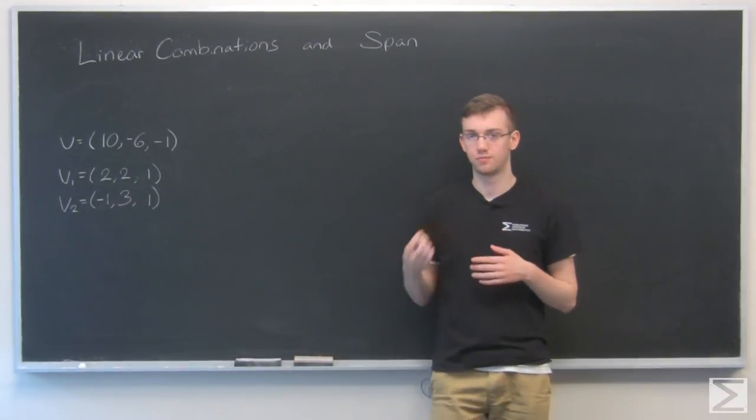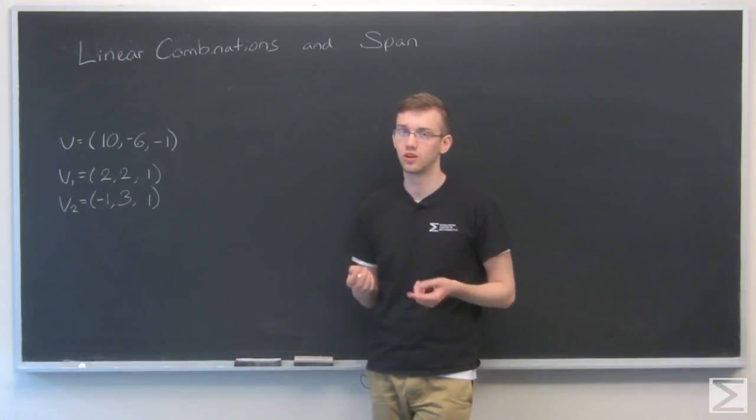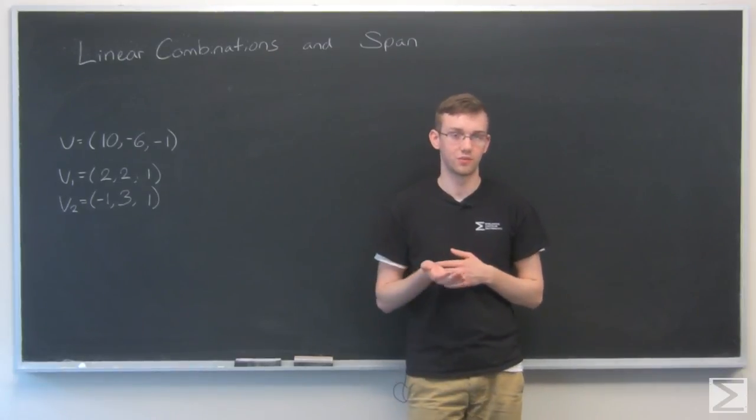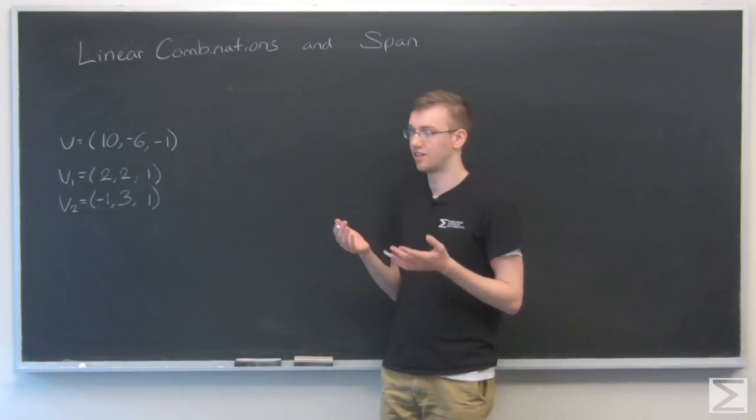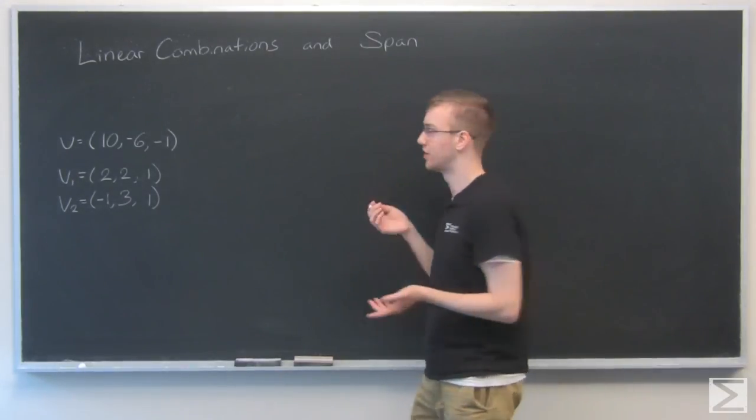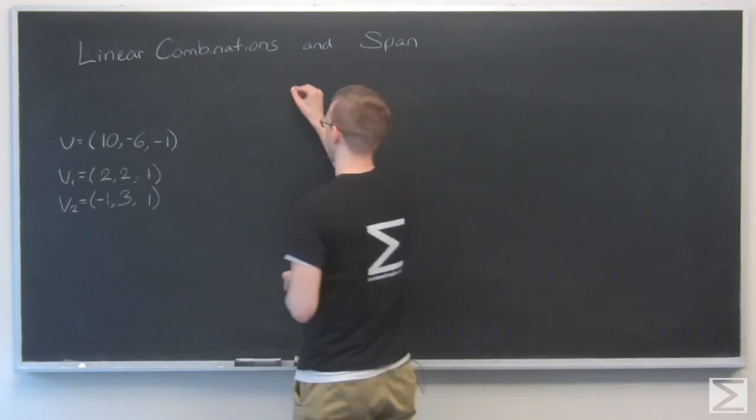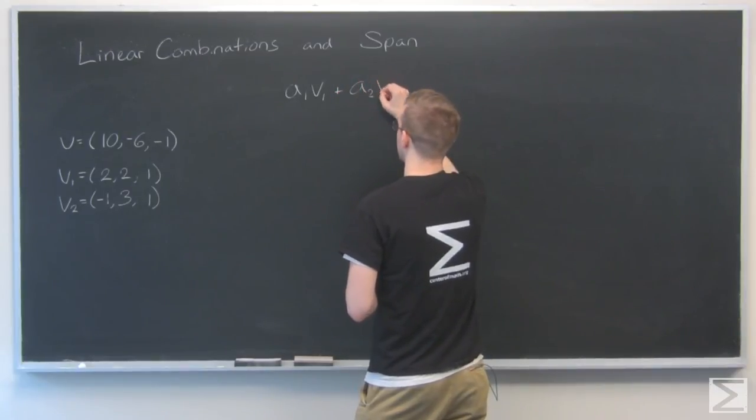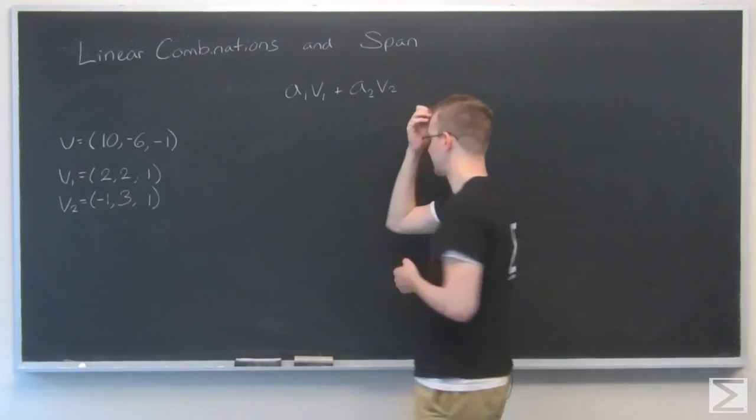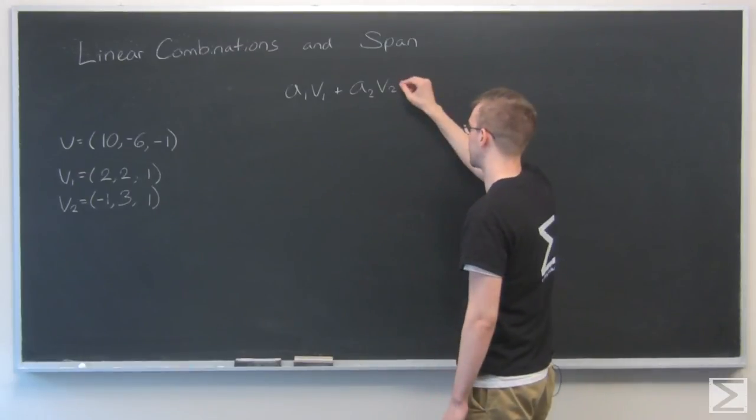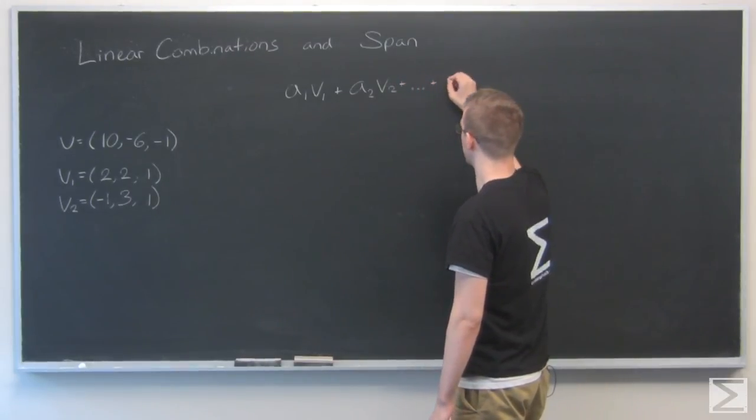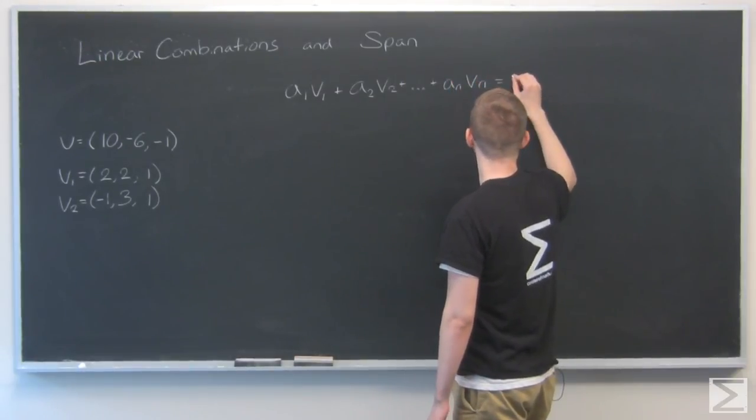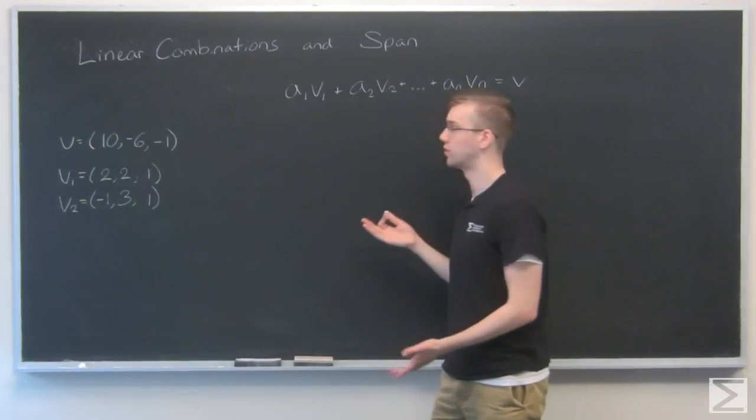If we have multiple vectors, say v1 and v2, linear combinations of those vectors is just a constant in front of either one of those and then added together. A linear combination will just look something like a constant a times v1 plus a2 v2 for however many vectors you have. We can go all the way up to n vectors, and that just has a result v. That's all a linear combination is.